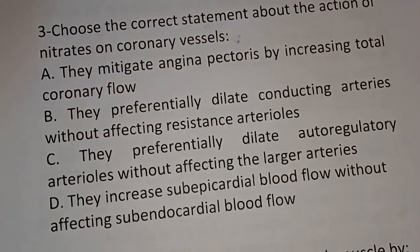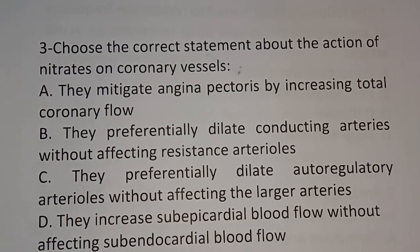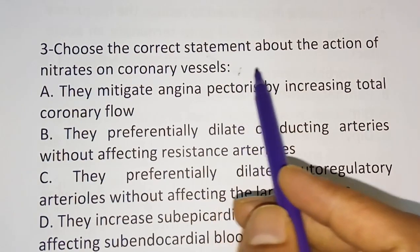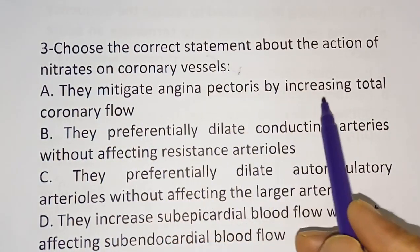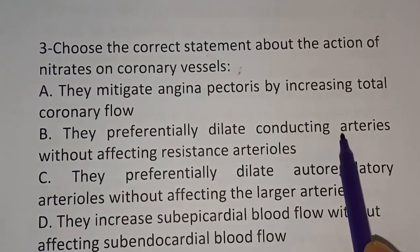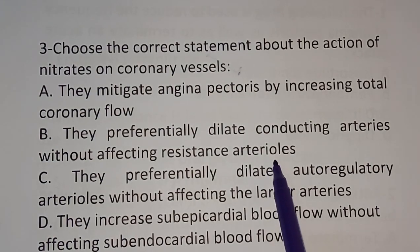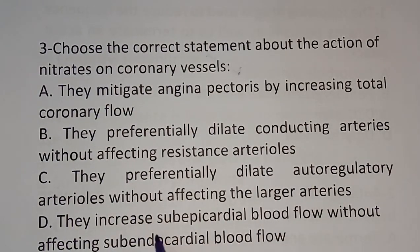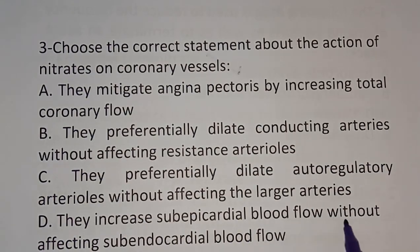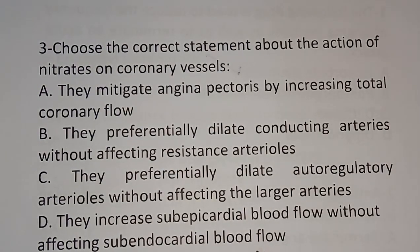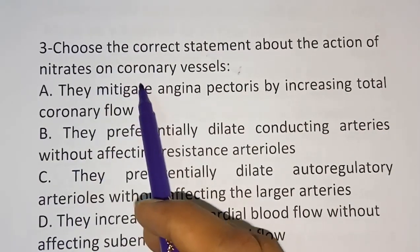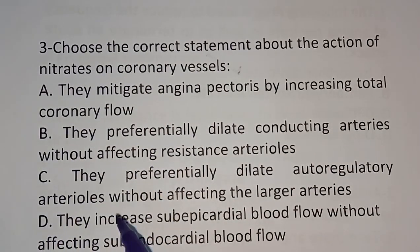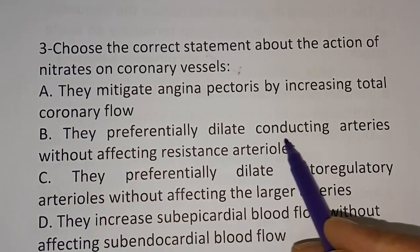Question three: choose the correct statement about the action of nitrates on coronary vessels. Options: A) they mitigate angina pectoris by increasing total coronary flow, B) they preferentially dilate conducting arteries without affecting resistance arterioles, C) they preferentially dilate autoregulatory arterioles without affecting larger arteries, D) they increase sub-epicardial blood flow without affecting sub-endocardial blood flow. The correct answer is option B.